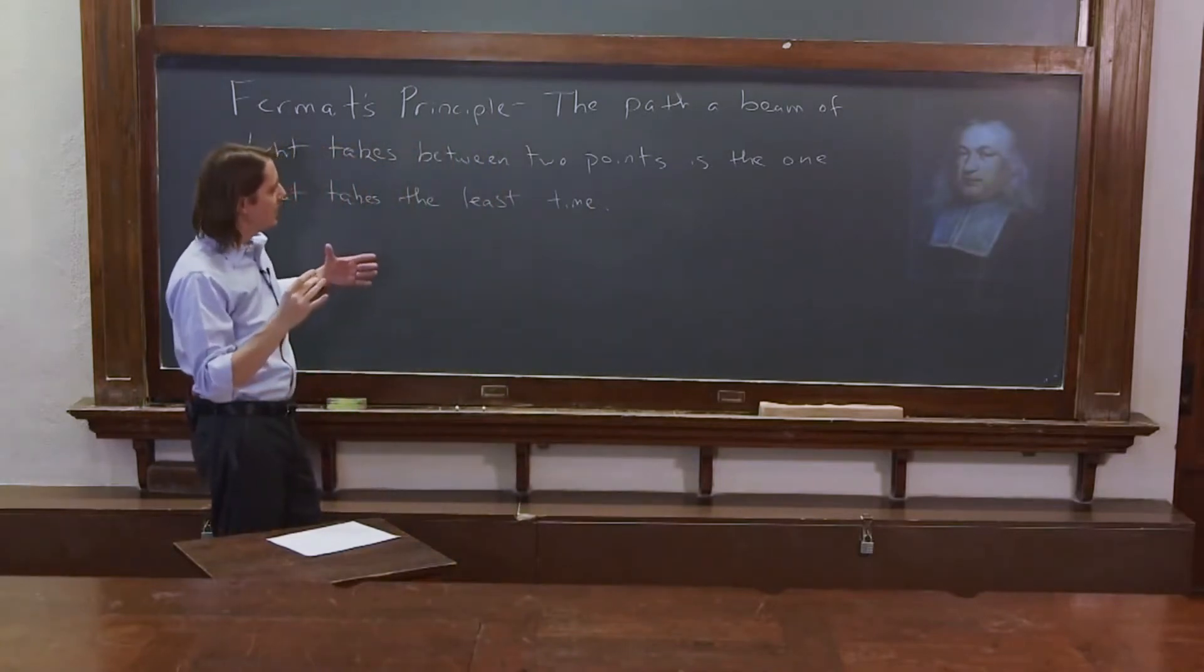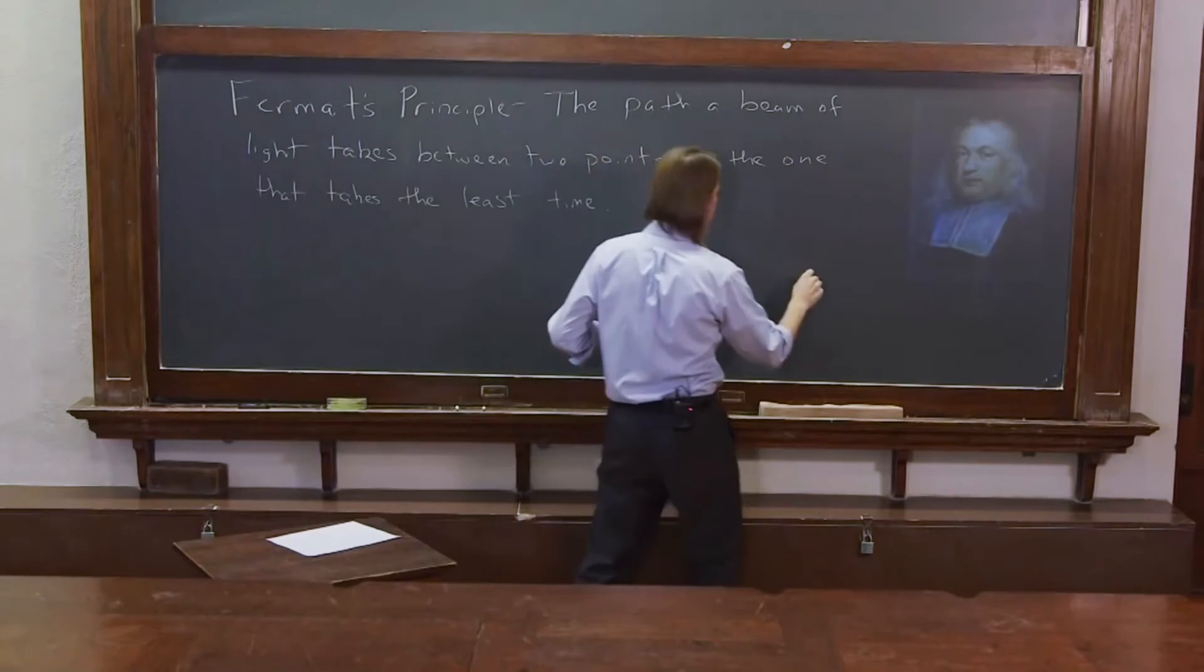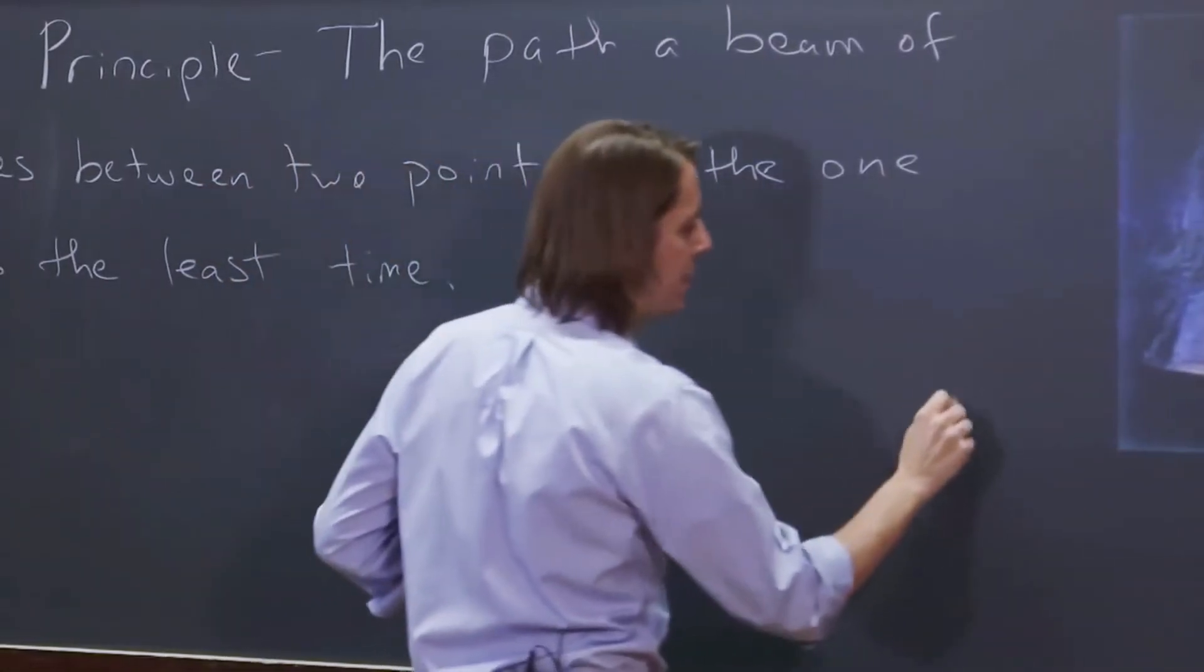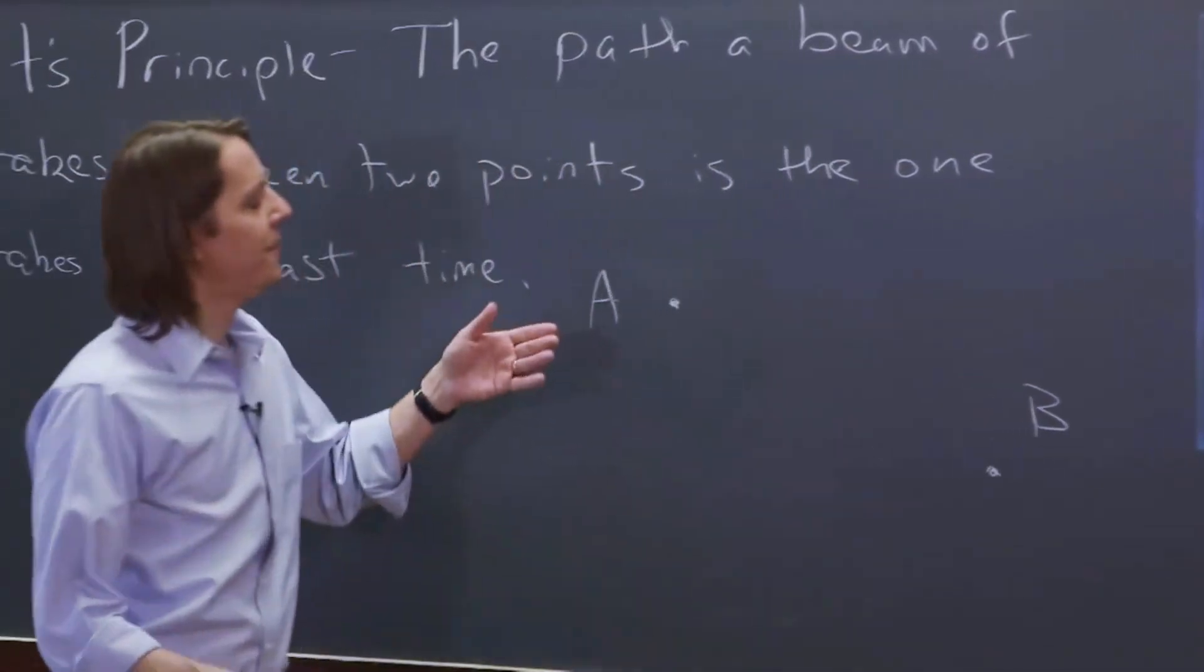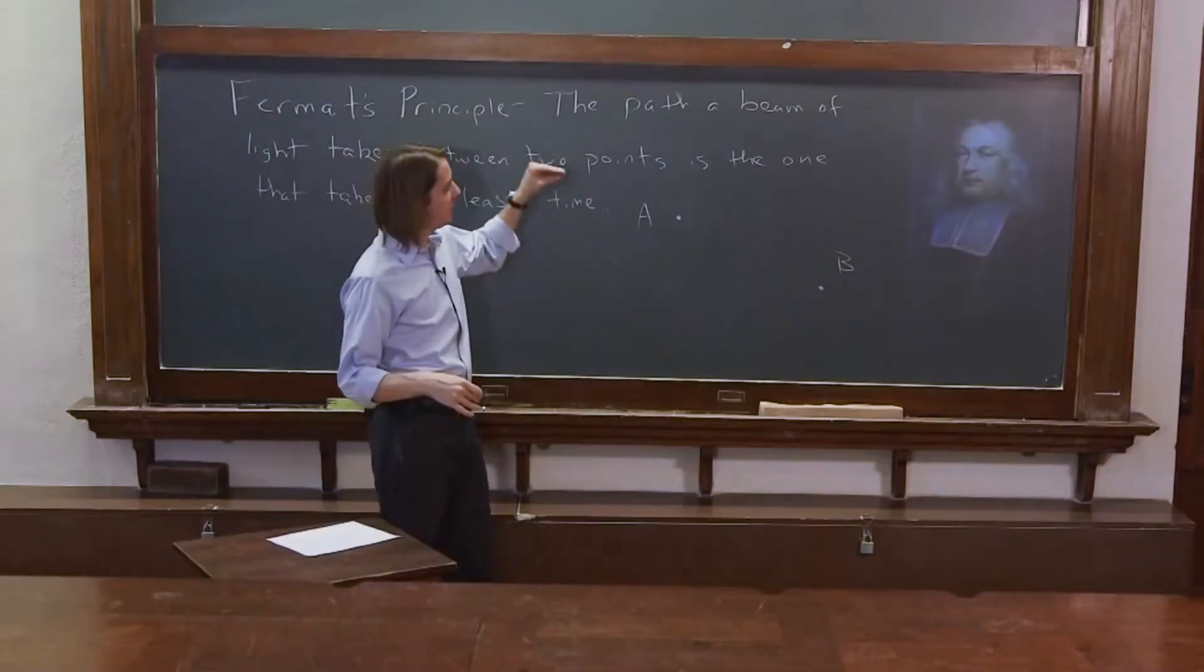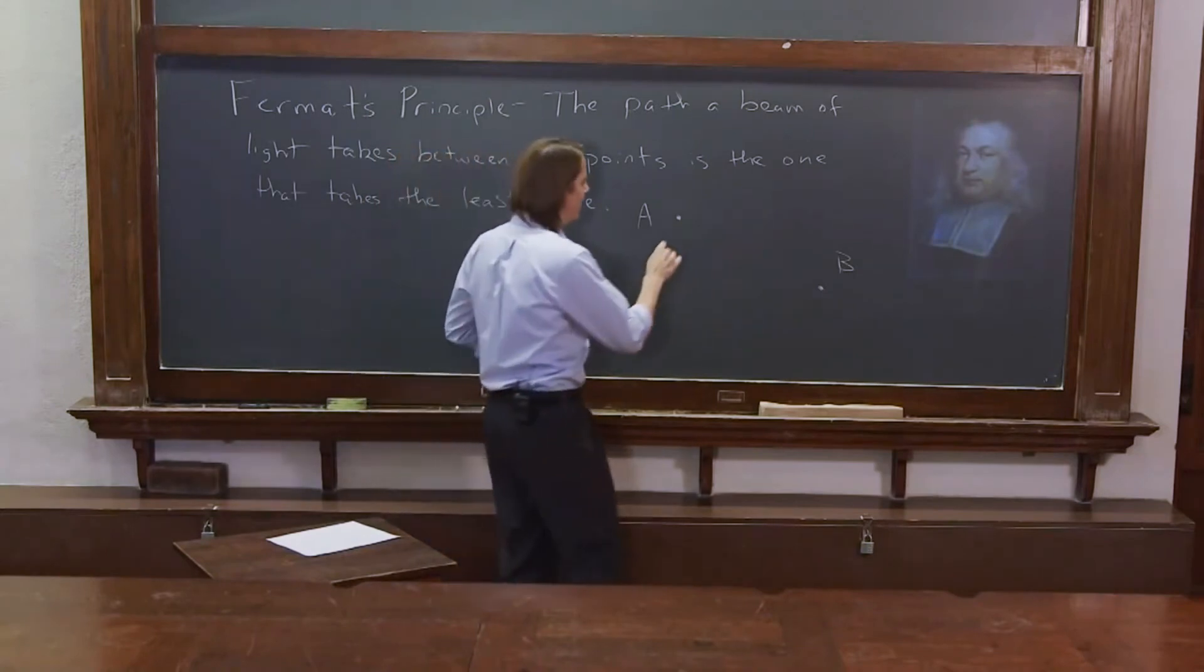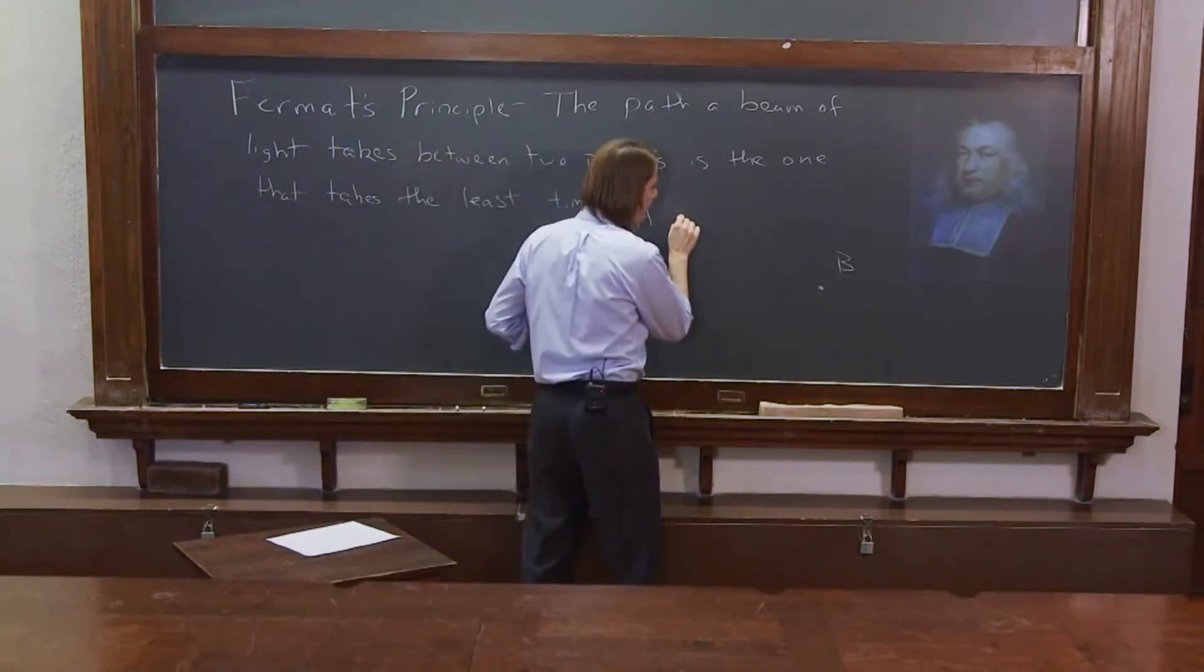So if you imagine two points, A and B, A here and B here, and you have, for whatever reason, light going from A to B, shining a laser, flashlight, whatever it is, if light is going to go from A to B, it's going to take the path of least time.